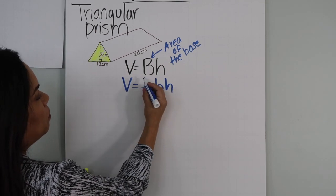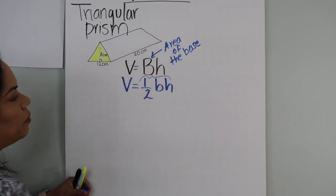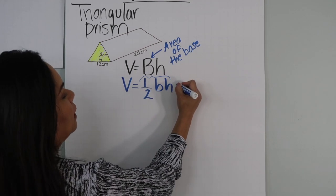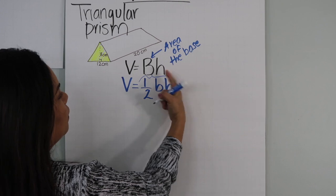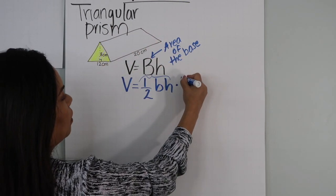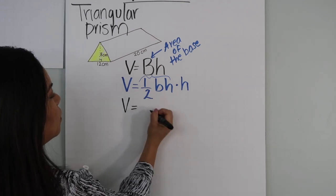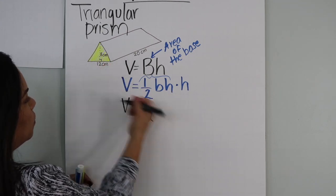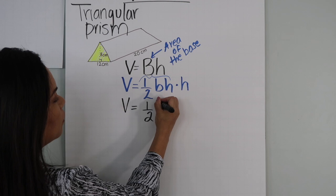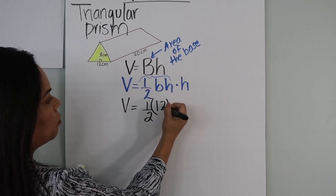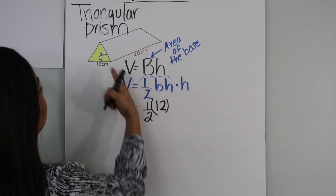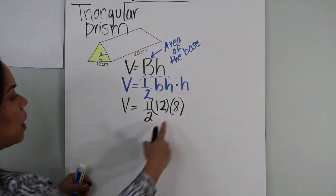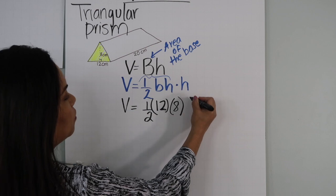This area of the triangle will be your capital B. Then we multiply it times the height of the triangular prism. So V equals one-half times 12 — using parentheses to represent multiplication — times 8 for the height of the triangle, times 20 for the height of the triangular prism.